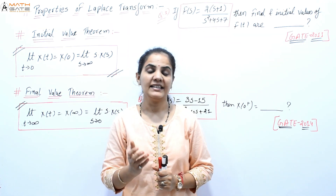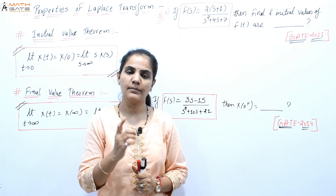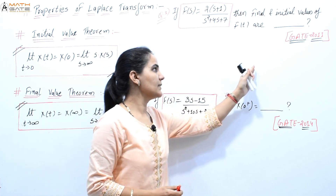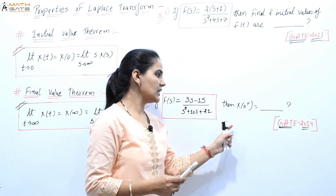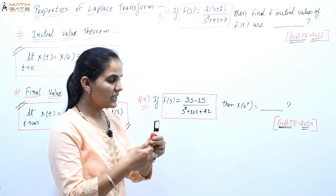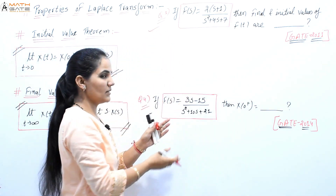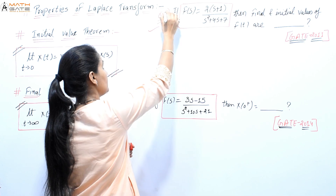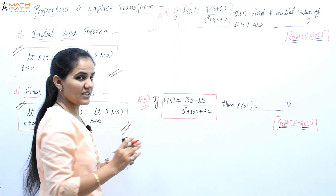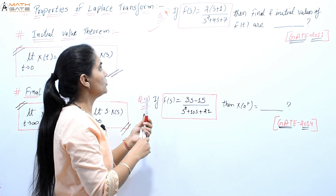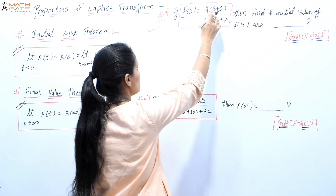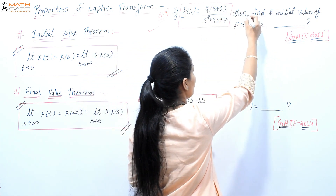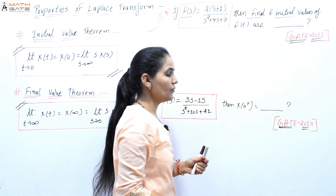Hello students, welcome to Math Gate. Let's discuss a few more questions built on the initial value theorem and final value theorem. This question has been asked in GATE 2011 and GATE 2014. Question number four: if F(s) = 2(s+1) / (s²+4s+7), find the final and initial values.